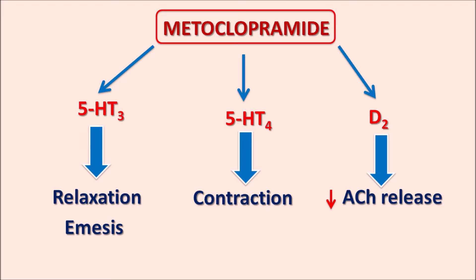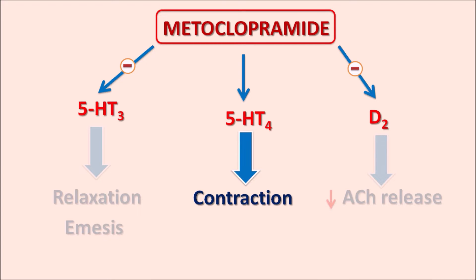Metoclopramide acts as an antagonist at the 5-HT3 receptors, thereby inhibiting GI relaxation and emesis. It also blocks the D2 receptors, thereby reducing the inhibitory effect of dopamine on acetylcholine release. Finally, it acts as an agonist at the 5-HT4 receptors, which increases GI smooth muscle contraction resulting in increased motility — that is why metoclopramide acts as a prokinetic and antiemetic agent.